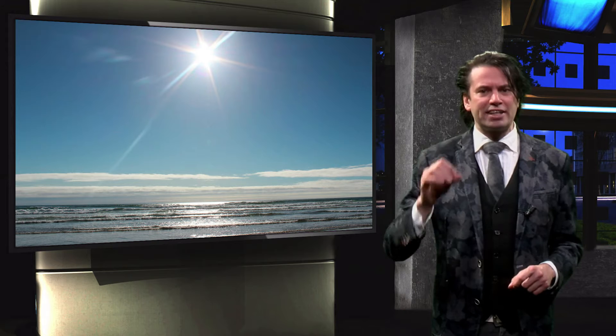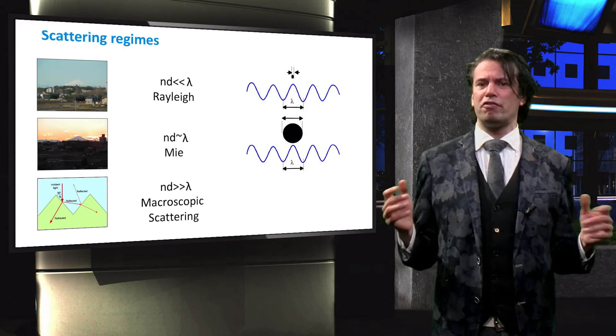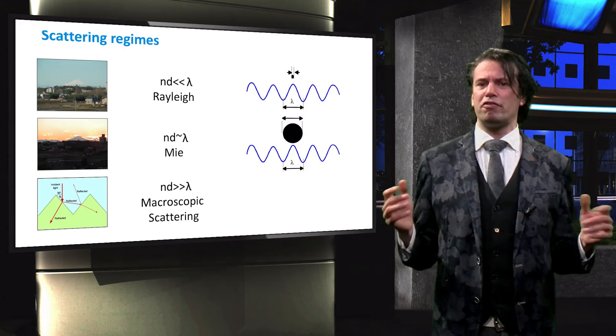The short answer is wavelength dependent scattering. A more complete answer however involves the relation between the wavelength of light and the size of the particles it encounters.